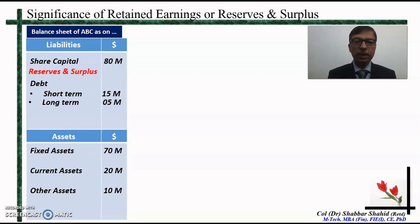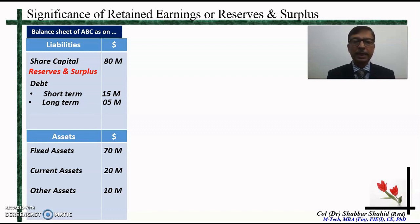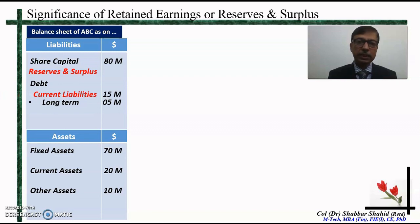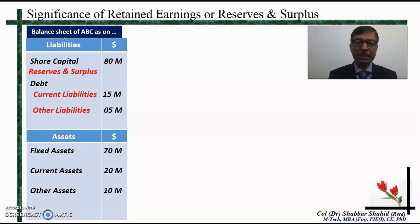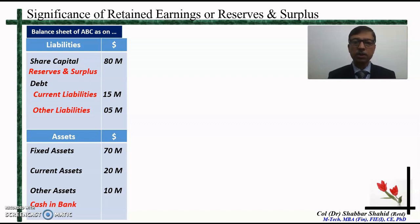We will insert something called reserves and surplus — I will explain what it is and where it comes from in a moment. What you see here as short-term debt, in a real balance sheet it is called current liabilities, and the long-term debt is called other liabilities. Under the head of assets, there will always be some money in the bank in the form of cash, because some of the current assets will always be in the form of cash for the routine expenditure of the company.